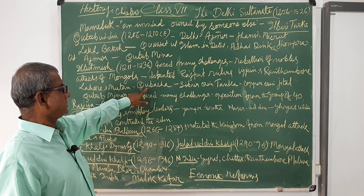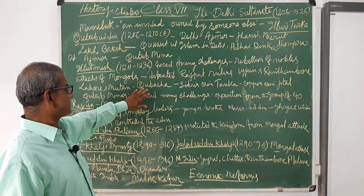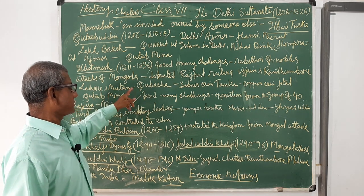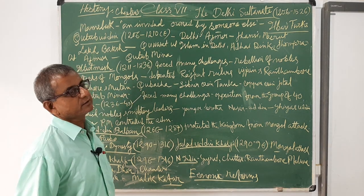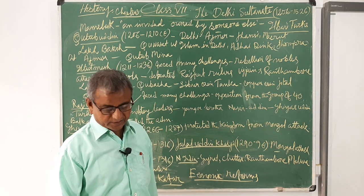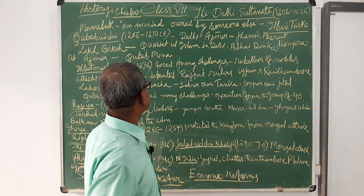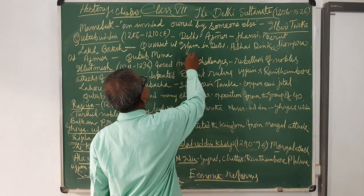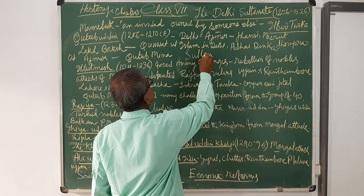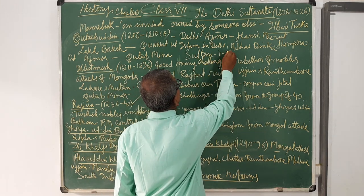Nasiruddin Qubaca of Lahore and Multan revolted, but he was defeated and those territories were brought under Iltutmish's control. Iltutmish adopted the title 'Sultan-i-Azam'.